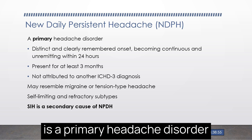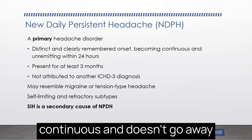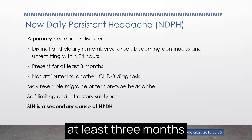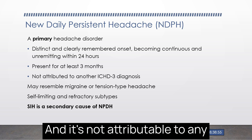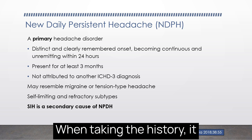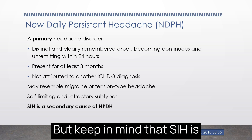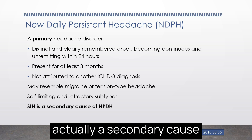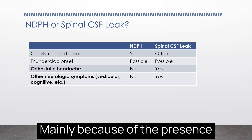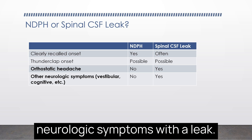New daily persistent headache is a primary headache disorder with a distinct and clearly remembered onset that becomes continuous and doesn't go away within 24 hours after onset. It must be present for at least three months to make the diagnosis and is not attributable to any other ICHD diagnosis. When taking the history, it sounds like migraine or tension-type headache, but keep in mind that SIH is actually a secondary cause of new daily persistent headache. The key differentiator is the presence of orthostatic headache and other neurologic symptoms with the CSF leak.